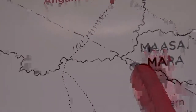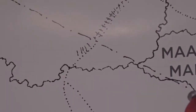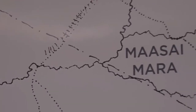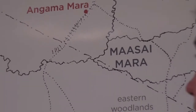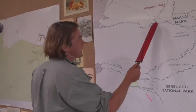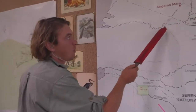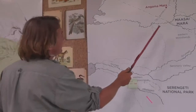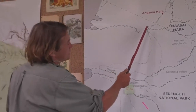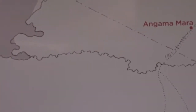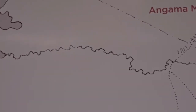65% of the Mara River Basin is in Kenya, and 35% is in Tanzania. It flows through Tanzania and through the Serengeti National Park, in an area called the Lamai Wedge. The rest of the river in this section is mostly small-scale agriculture — tiny little subsistence farmers.